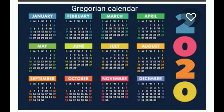The Gregorian calendar is followed in most countries. It is a solar calendar. A common year has 365 days, which are divided into 12 months of different lengths. Eleven months comprise either 30 or 31 days, while the second month — which is February — has 28 days during a common year and 29 days in a leap year.